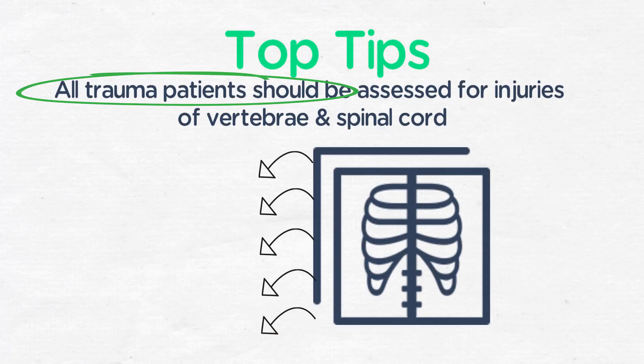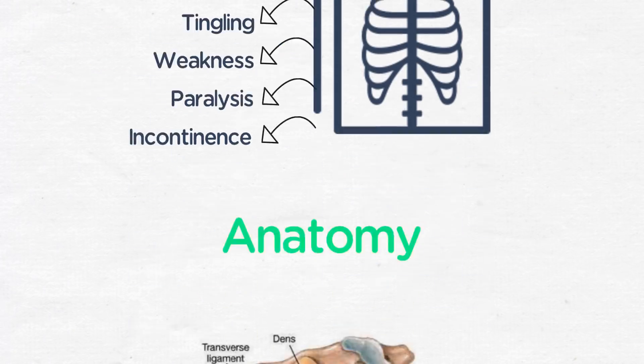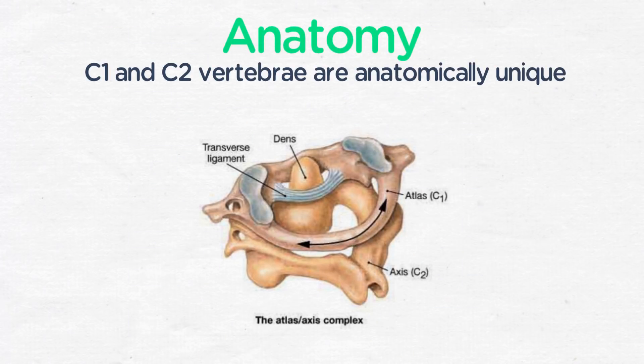Symptoms suggesting spinal cord injury include numbness, tingling, weakness, paralysis, and incontinence, and the majority are from blunt trauma. The C1 and C2 vertebrae are anatomically unique.